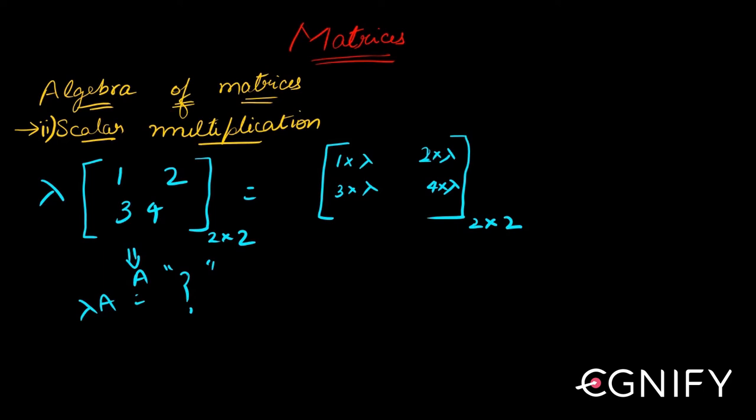So it's extremely simple. You pick up each and every element, multiply that to lambda, and put the result in the corresponding position. That's how it is.